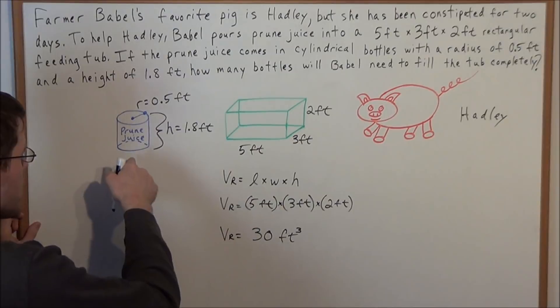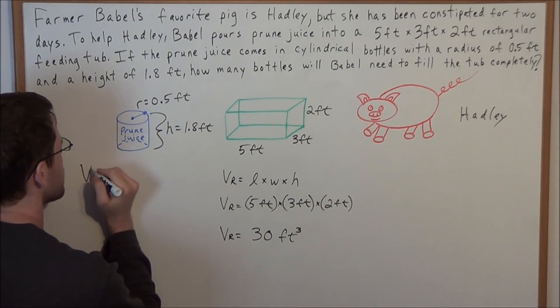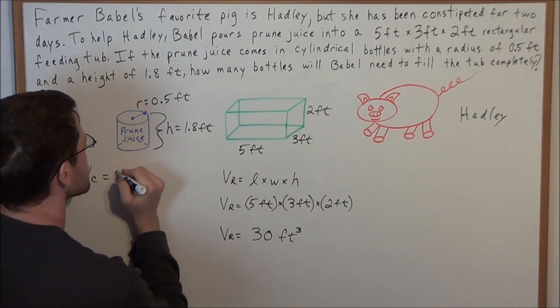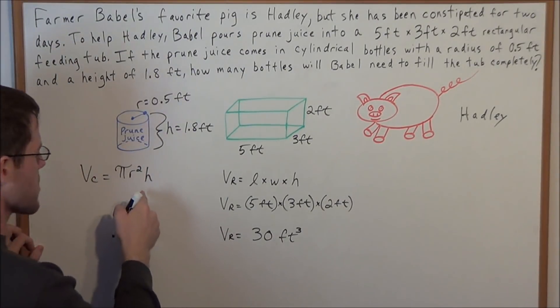So next we want to find the volume of each of these cans of prune juice. So we have the volume of a cylinder. The general equation for the volume of a cylinder is pi r squared times h, which is the height.